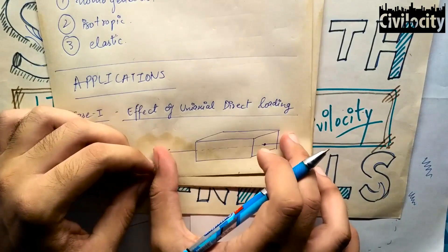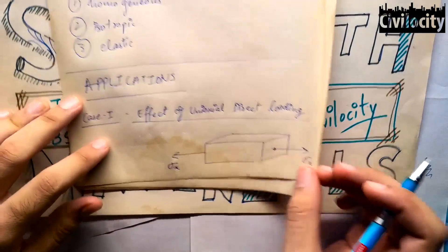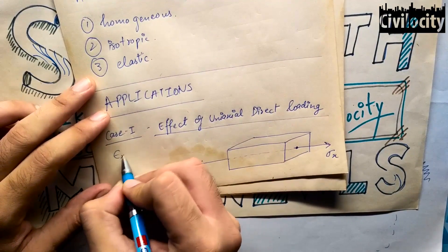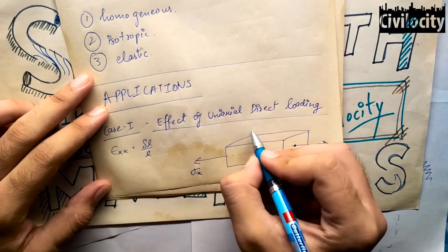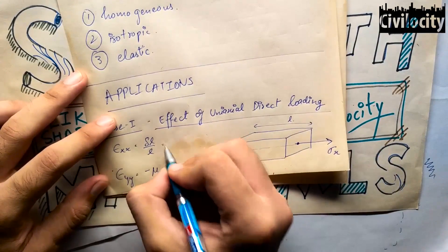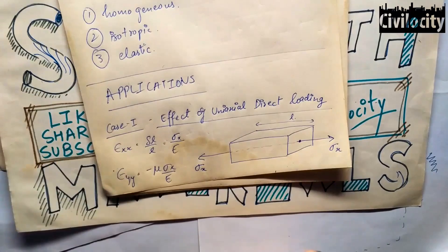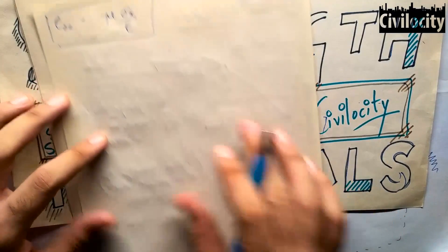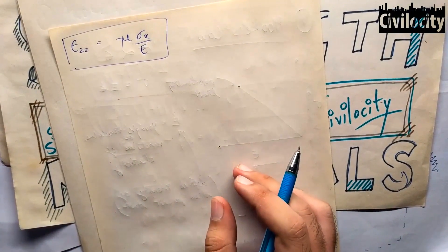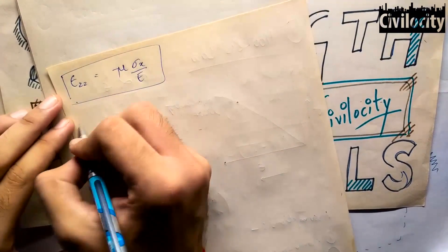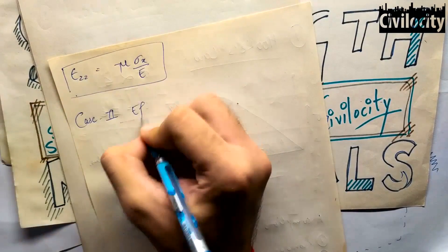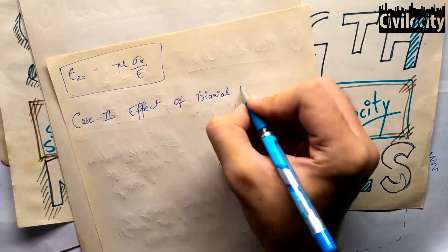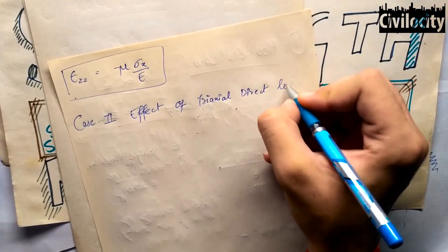If we put a force in the longitudinal direction, the length will increase, but the sides B and D will decrease due to lateral strain. Strain in the x-direction will be equal to delta L upon L. Strain in the yy-direction will be equal to negative nu times sigma x upon E. Similarly, strain in the zz-direction will be equal to minus nu times sigma x upon E. The first letter represents the plane and the second letter represents the direction of stress.